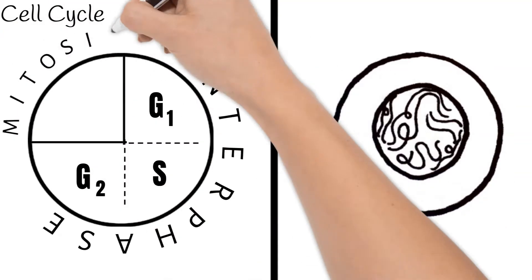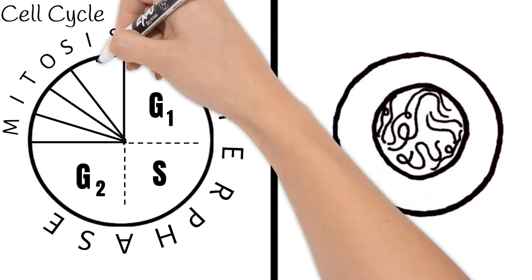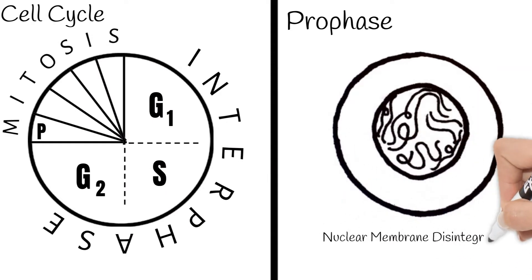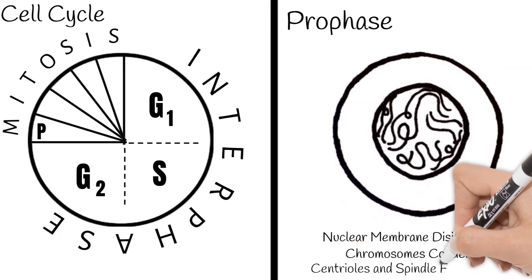Mitosis has five main phases. First is prophase. During prophase, the nuclear membrane disintegrates. The chromosomes condense and centrioles and spindle fibers appear.